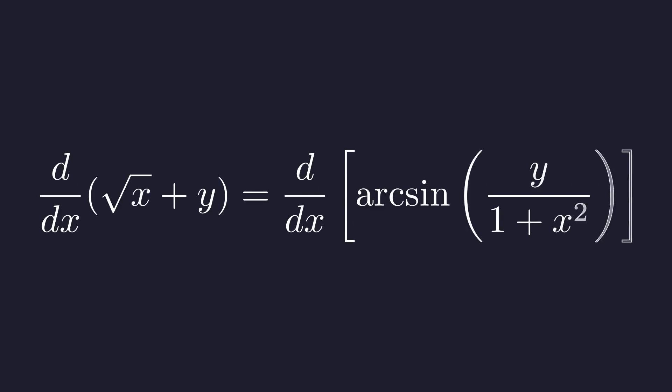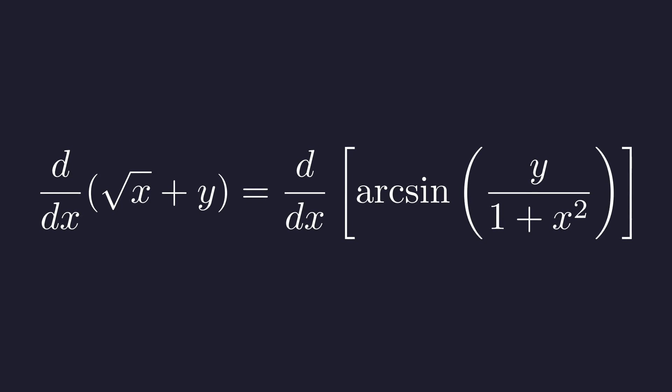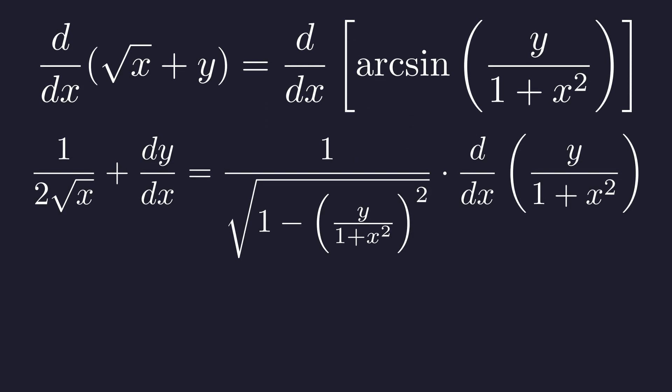We begin by taking the derivative with respect to x of both sides. The left side is straightforward. The right side requires the chain rule. The derivative of arcsin of u is 1 over the square root of 1 minus u squared times the derivative of u.